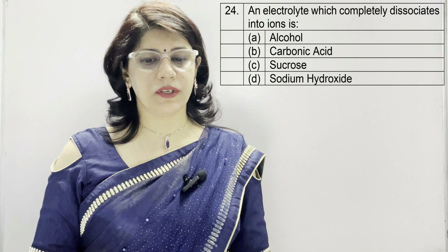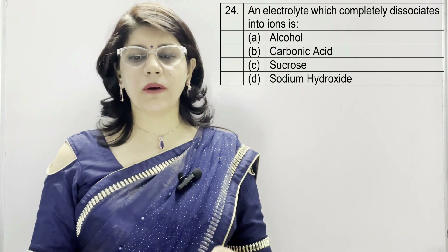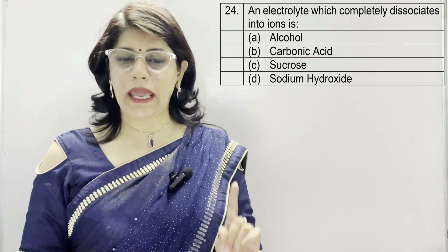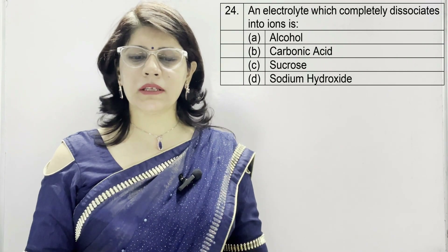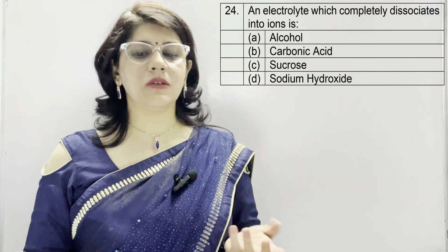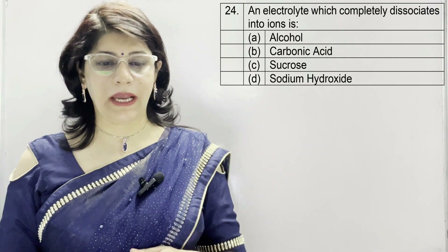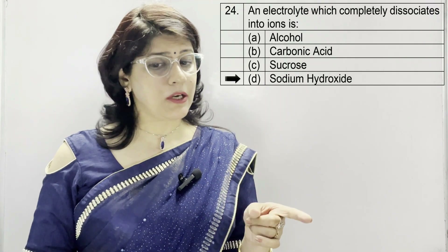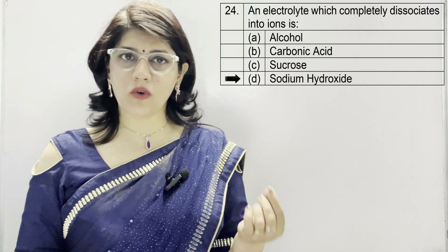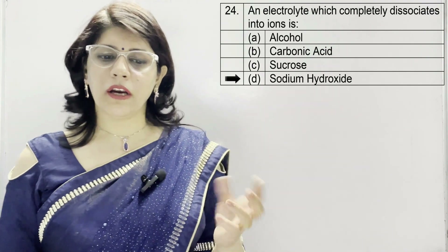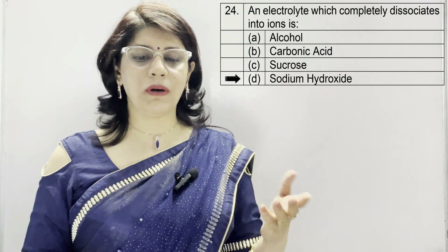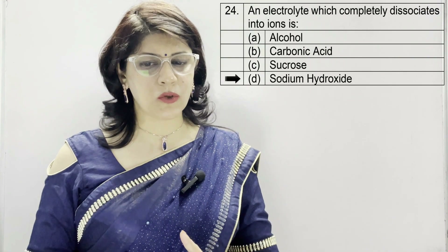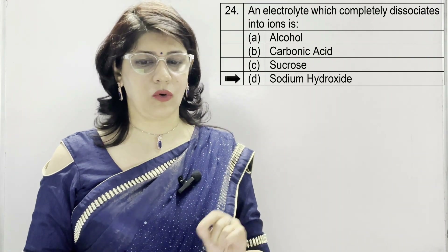In question number 24: an electrolyte which completely dissociates into ions is — A: alcohol, B: carbonic acid, C: sucrose, D: sodium hydroxide. The correct option is D — sodium hydroxide, which completely dissociates into Na+ and OH- ions when dissolved in water. Since it completely dissociates, it is a strong electrolyte.